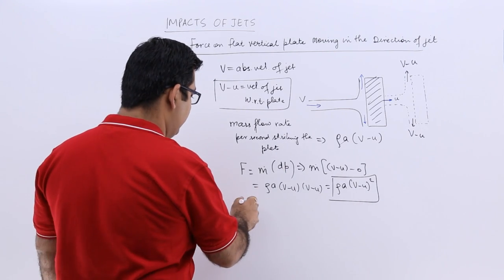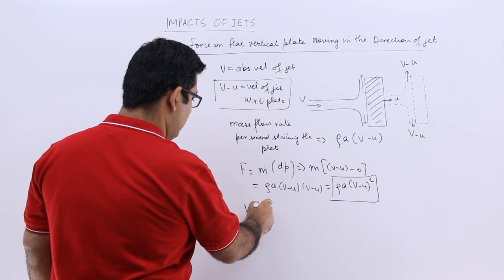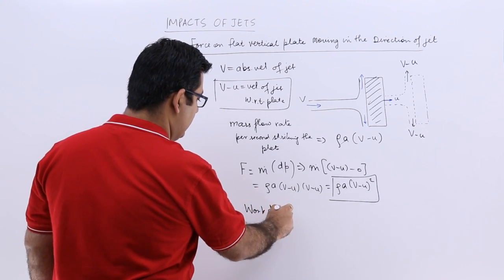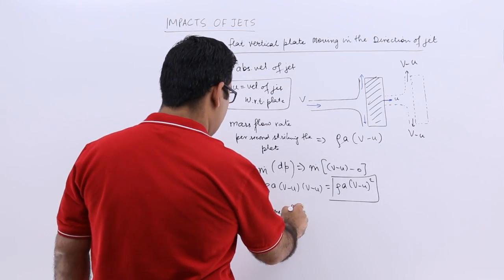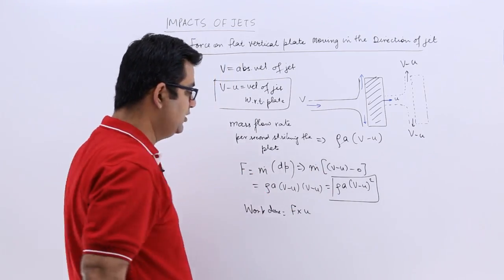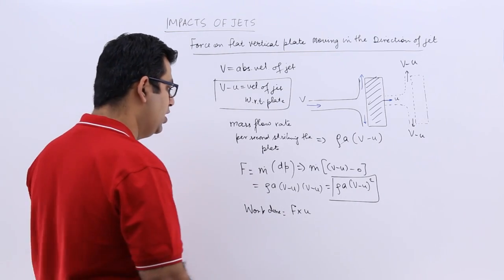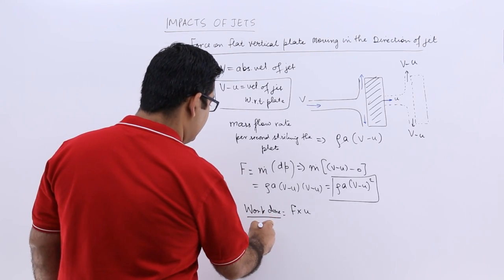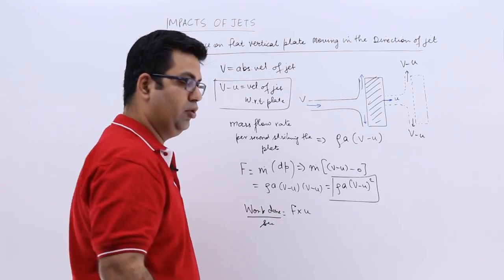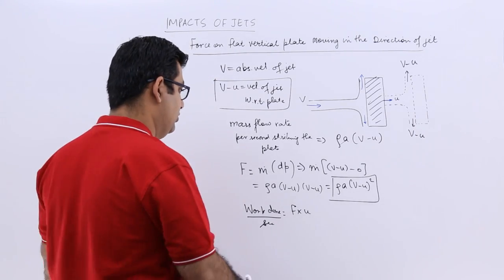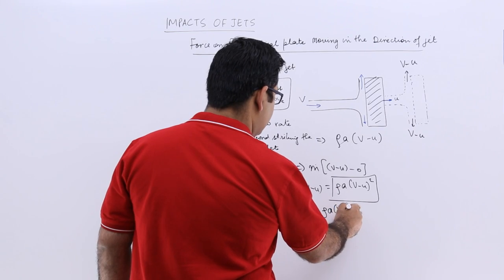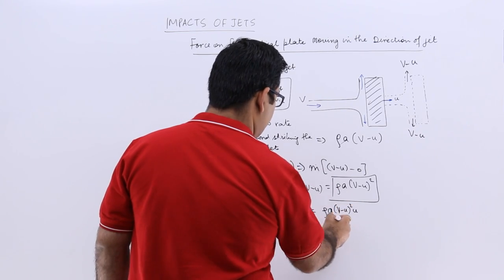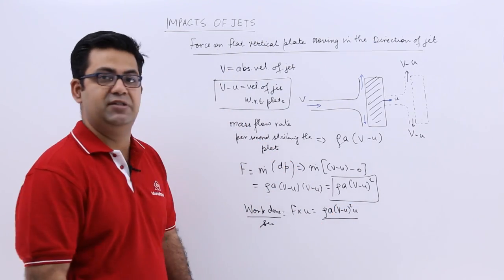Now because it is moving, there will be some work done. So work done by the jet on the plate is force into velocity u. But I would say it is the work done per second, so it will be force into the distance covered per second. So this would be ρa(v-u)²u. That is the work done per second.